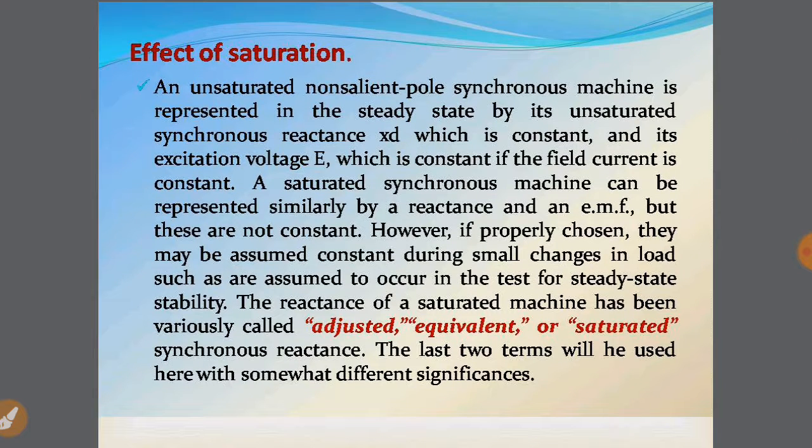So first let's see what is an unsaturated machine. An unsaturated non-salient pole synchronous machine is represented in the steady state by its unsaturated synchronous reactance XD which is constant, and the excitation voltage E which is constant if the field current is constant. Thus we see that voltage E is indirectly dependent on the field current.